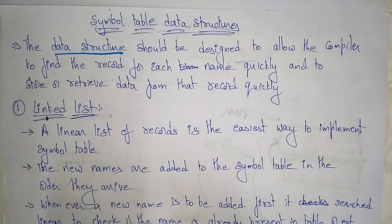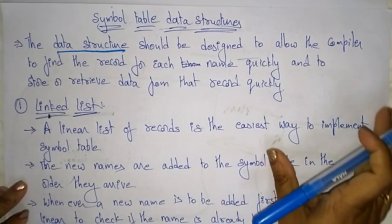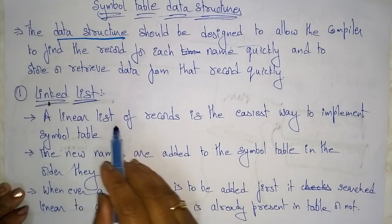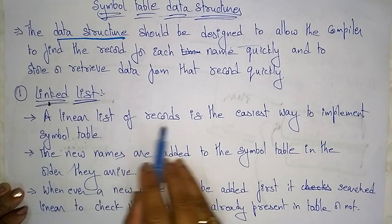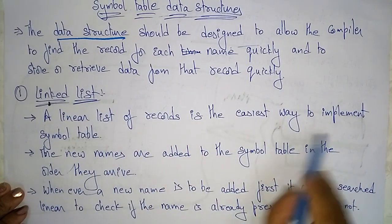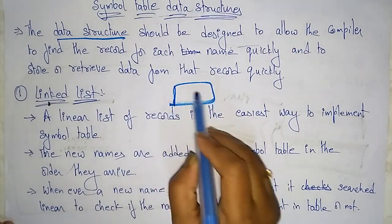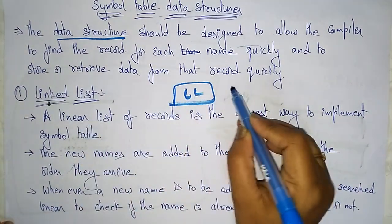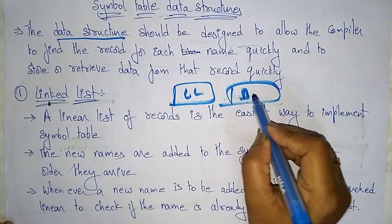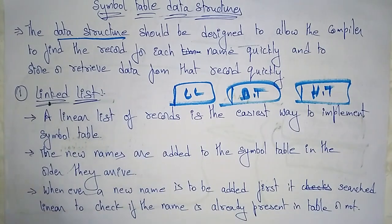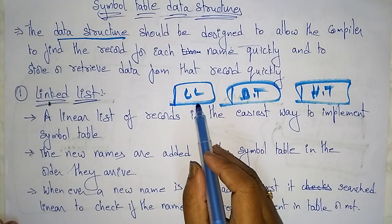What type of data structures can we use in the symbol tables for storing and retrieving data? The first is a linked list. A linear list or linked list of records is the easiest way to implement the symbol table. The symbol table can also be arranged in the form of a binary tree or a hash table.